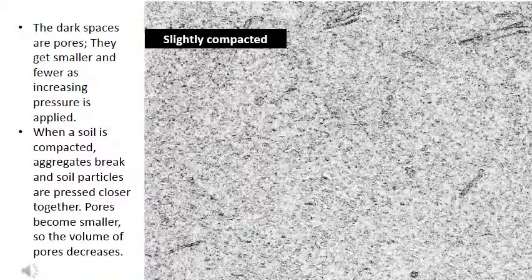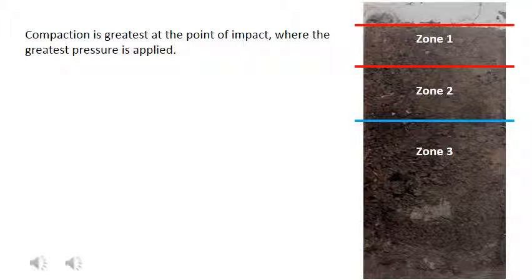When a soil is compacted, aggregates break and soil particles are pressed closer together. Pores become smaller, so the volume of pores decreases. Compaction is most severe at the point of contact, for that is where the pressure is greatest.